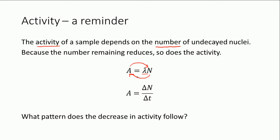As time goes on, the activity reduces because the number remaining reduces, and the fact that you've got less reduces the activity, which again reduces the number remaining. So the activity and the number of nuclei are both going to decrease over time. You can think of the activity as the rate of change of the number of undecayed nuclei.